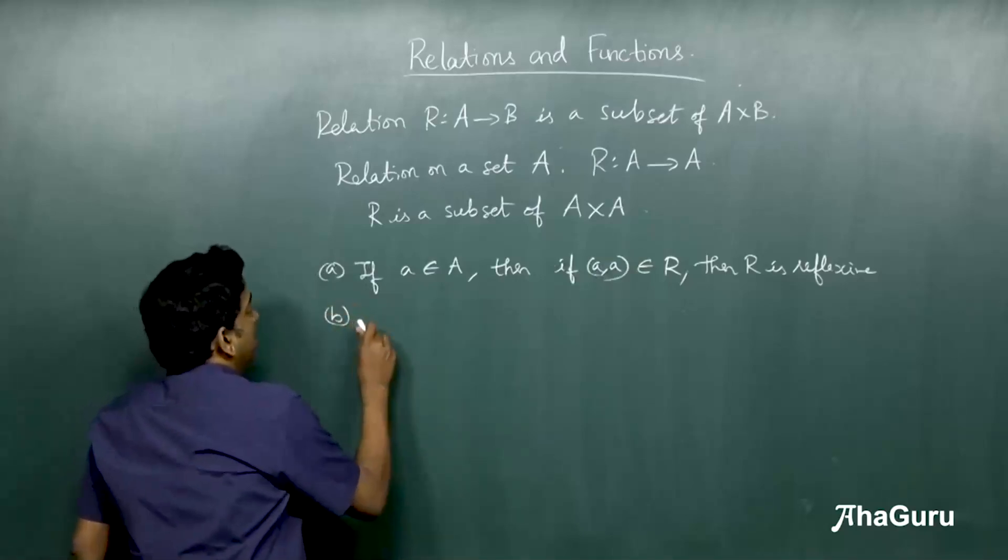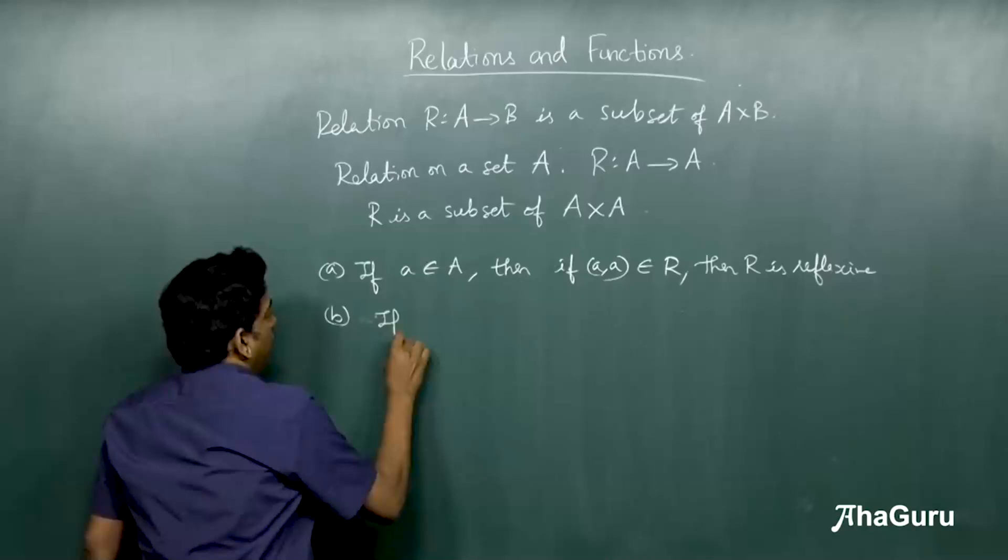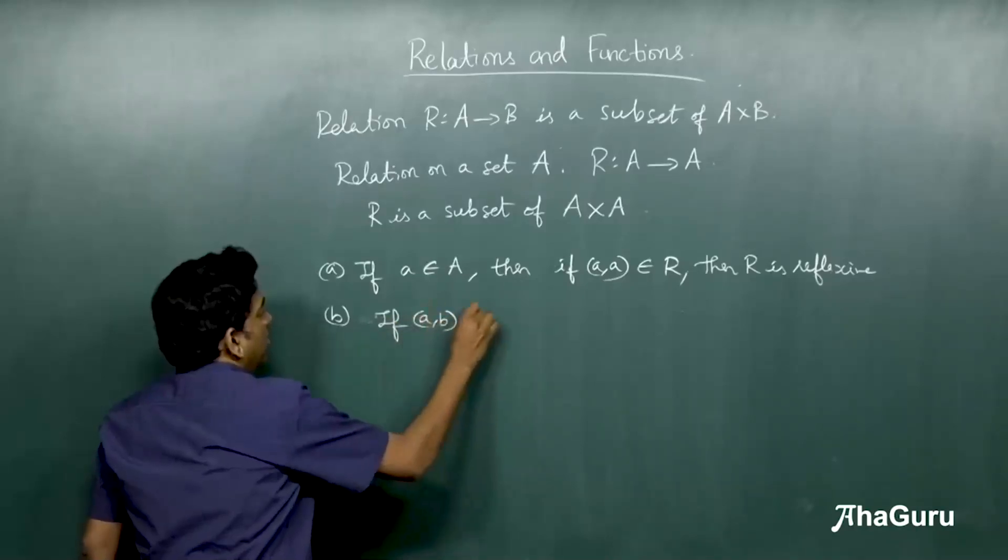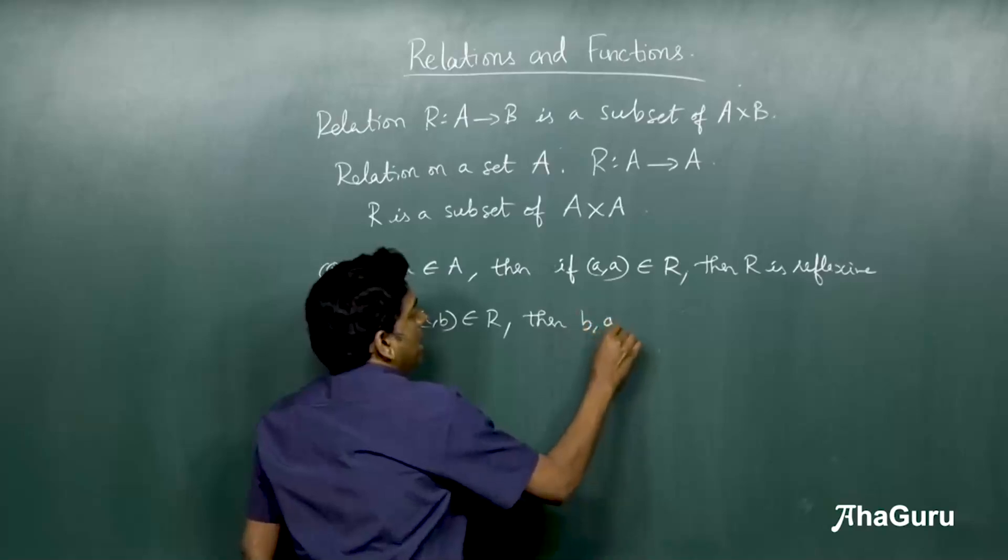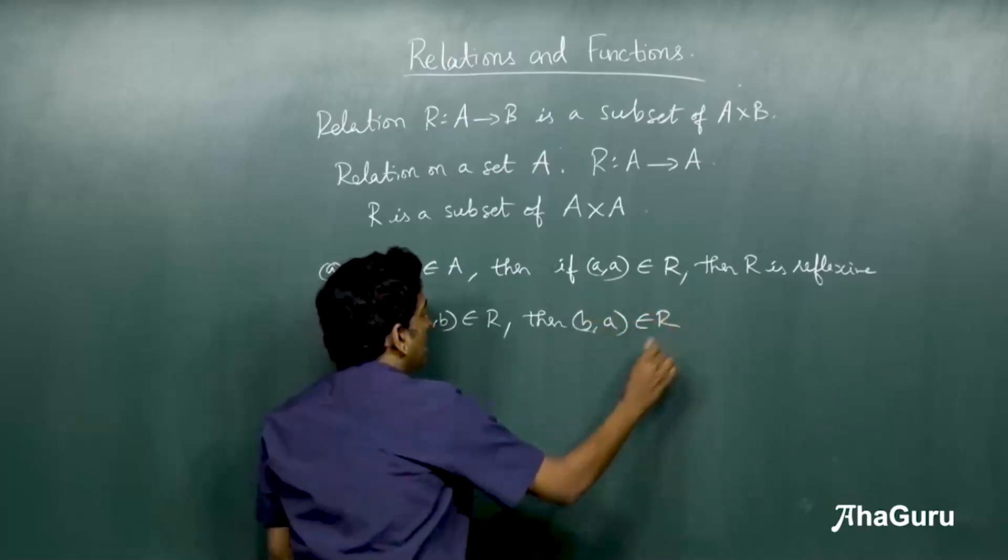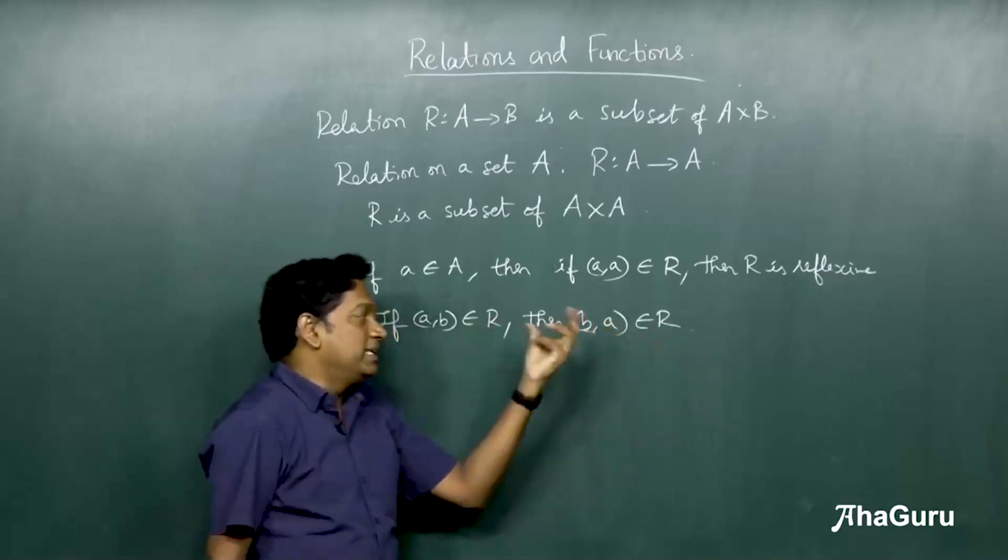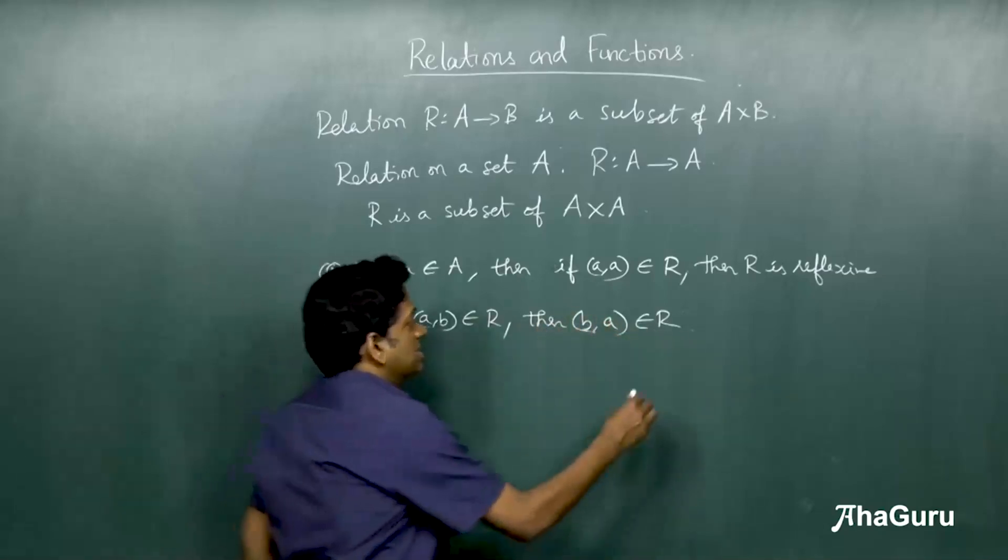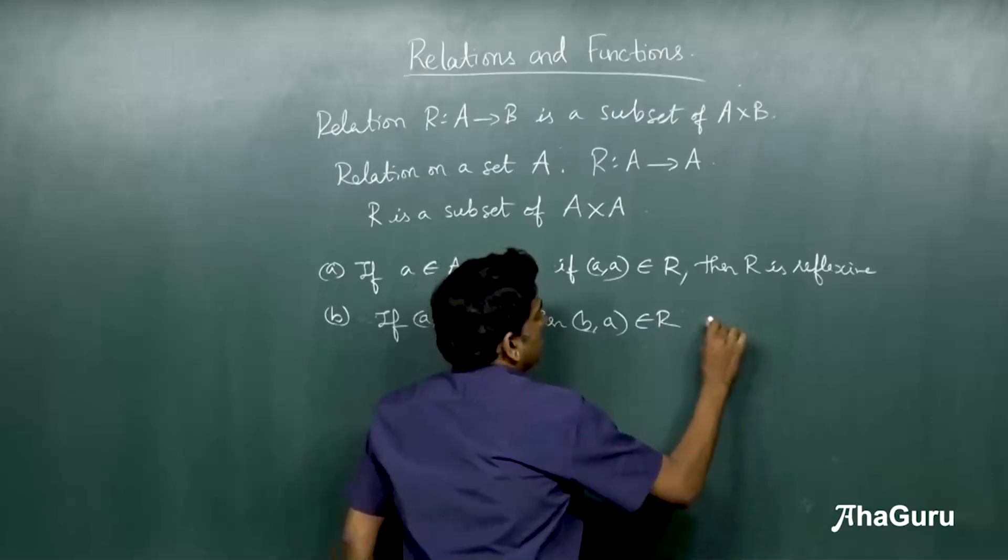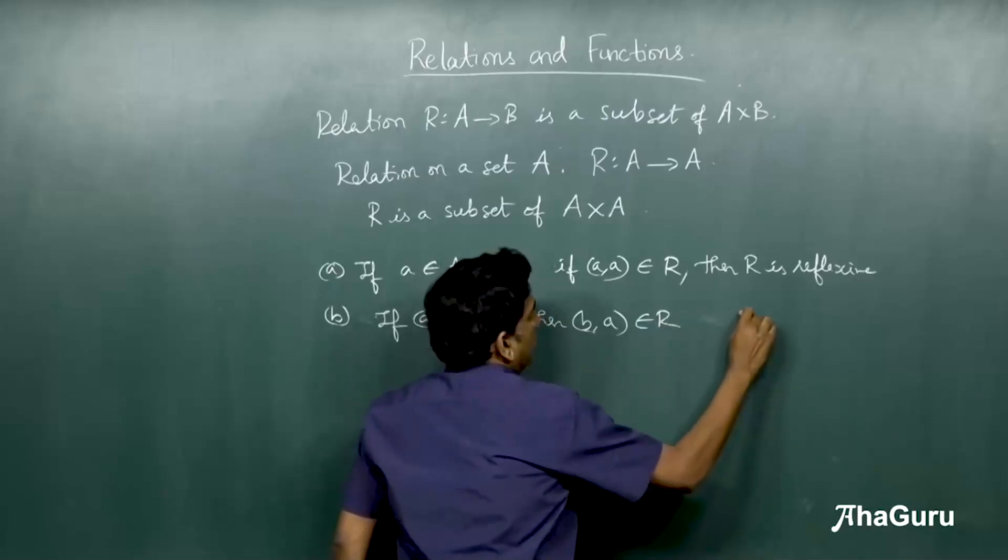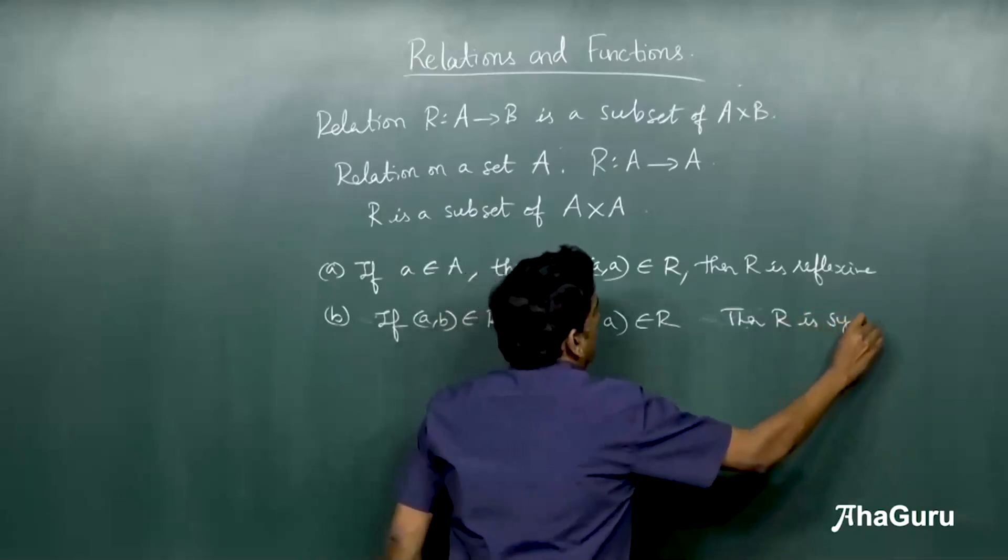Symmetric says, if A comma B belongs to R, then B comma A must belong to R. Here, A and B are clearly not equal entities. Then this means R is symmetric.